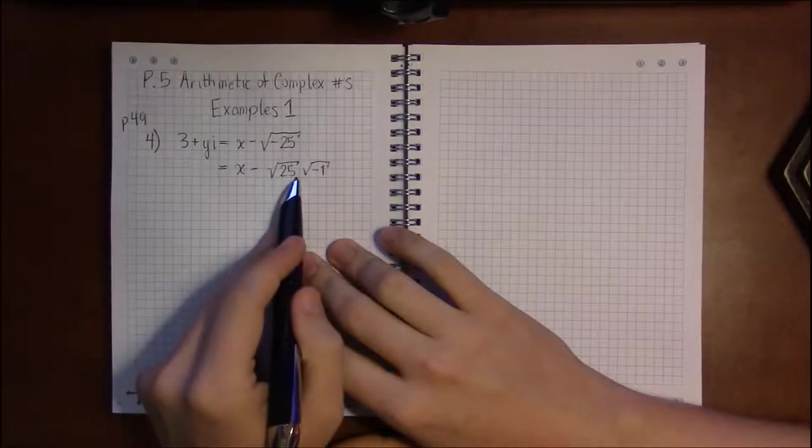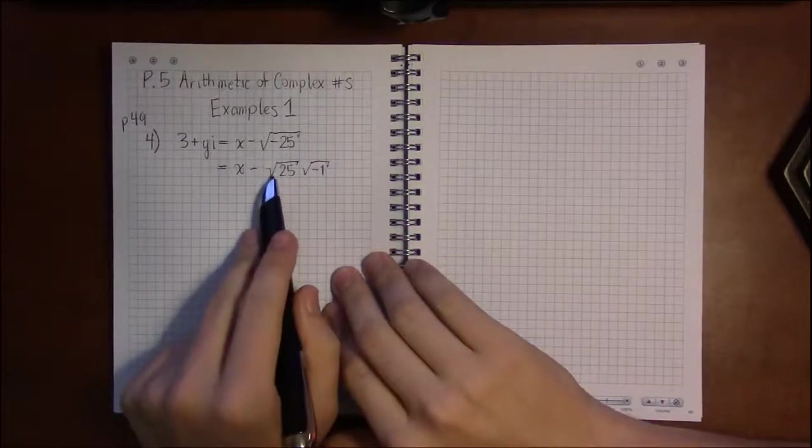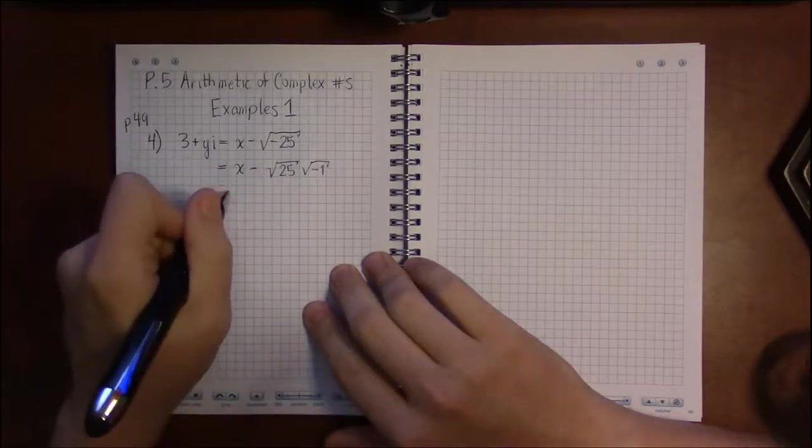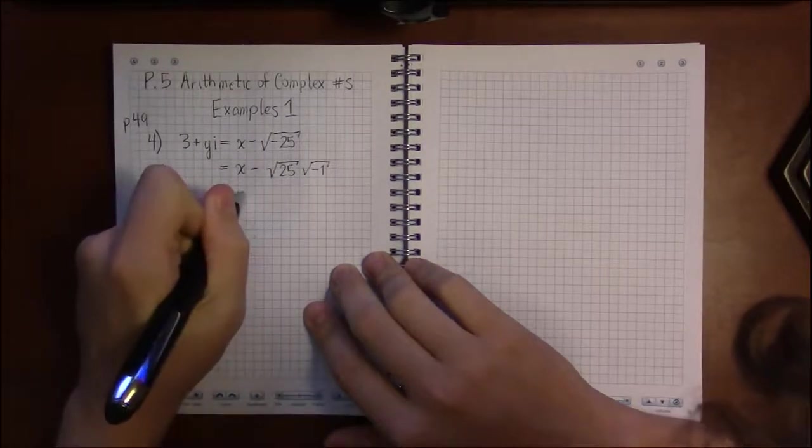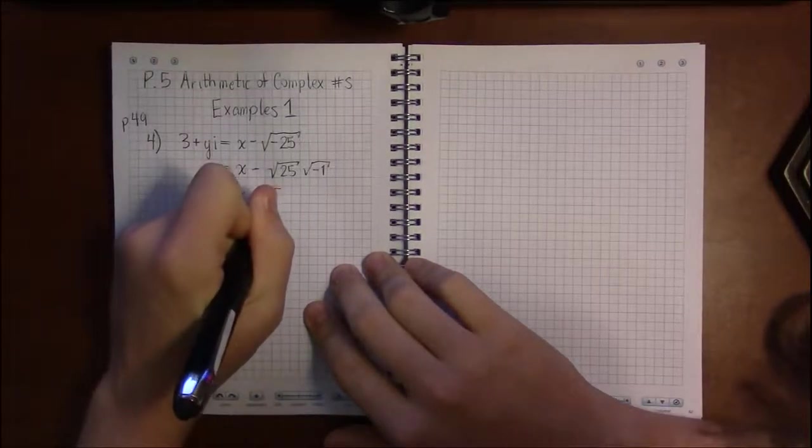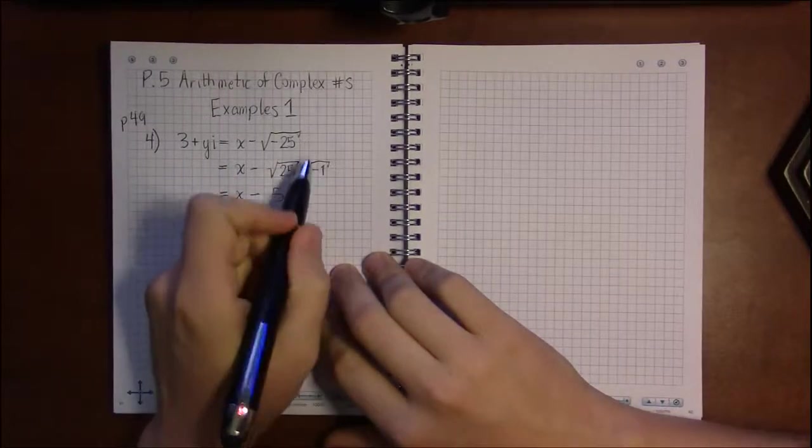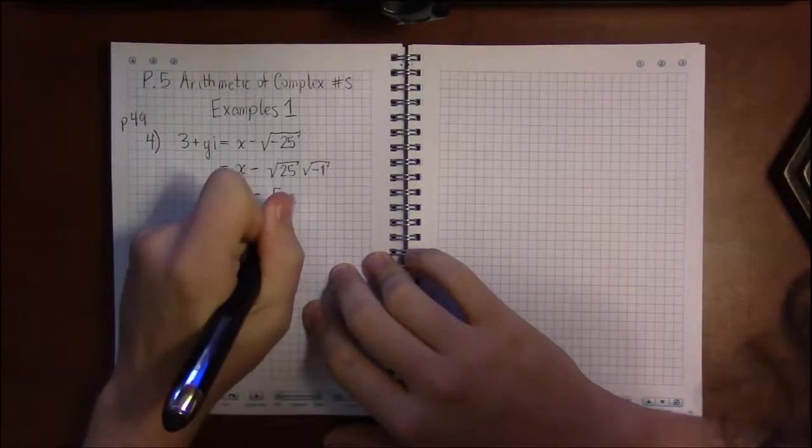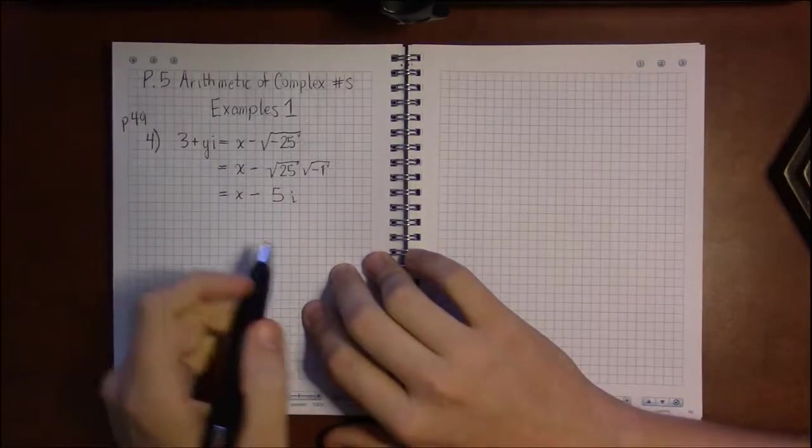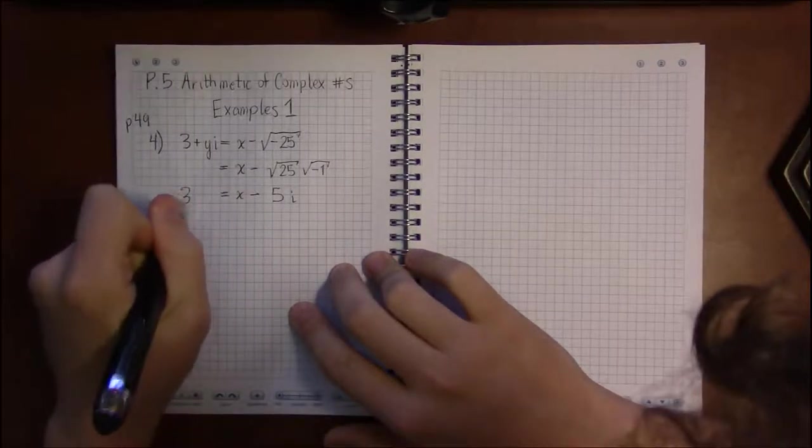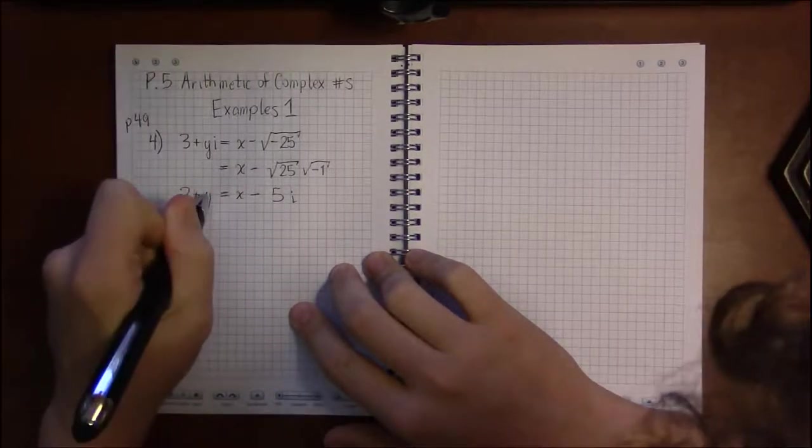Square root of 25 is 5, and square root of negative 1, well that's what we've been calling i this whole time. So we do have an i on both sides, so this will work out.